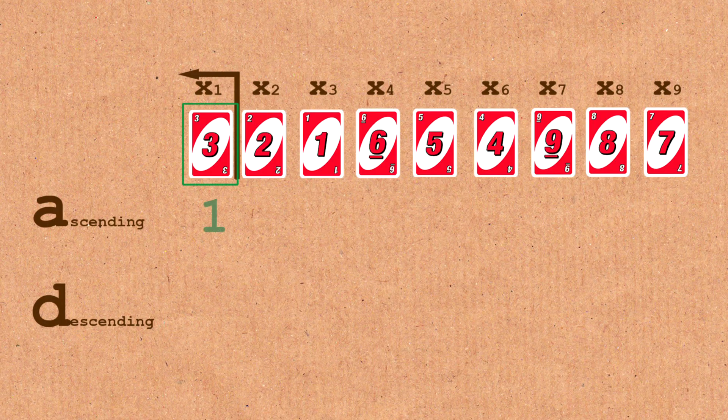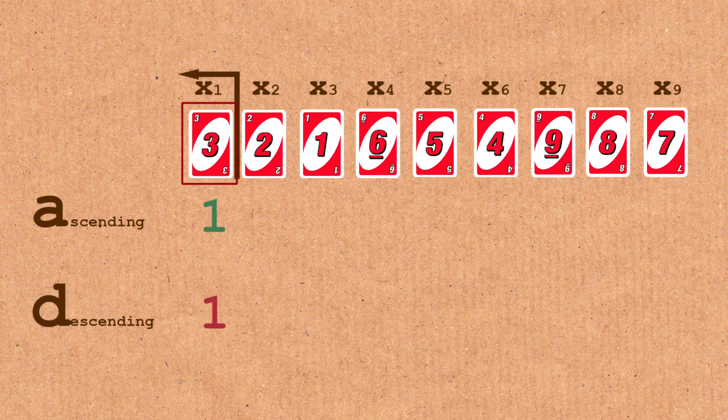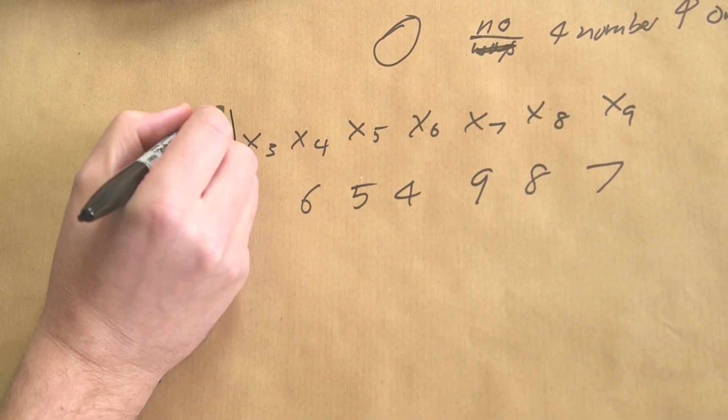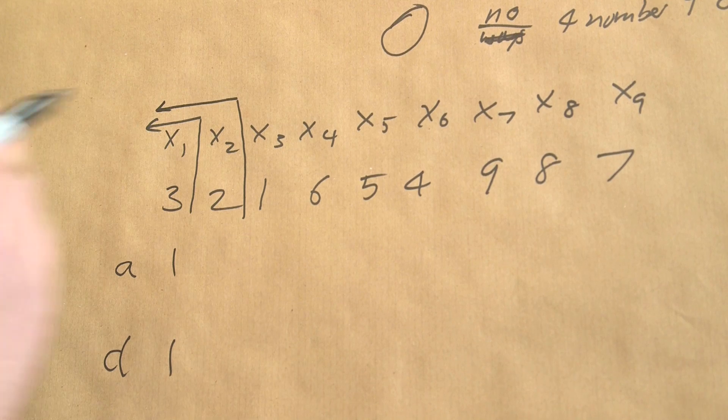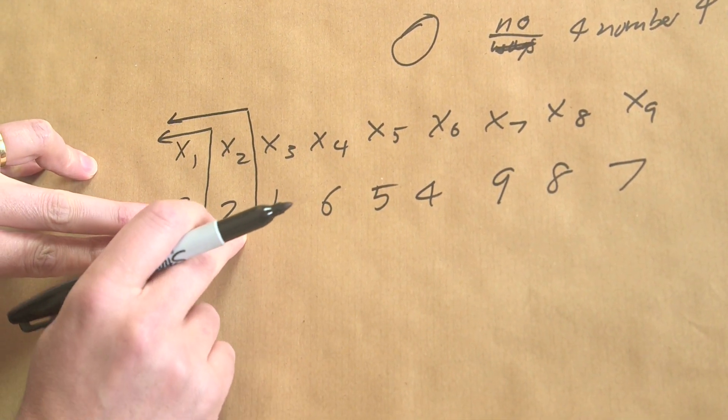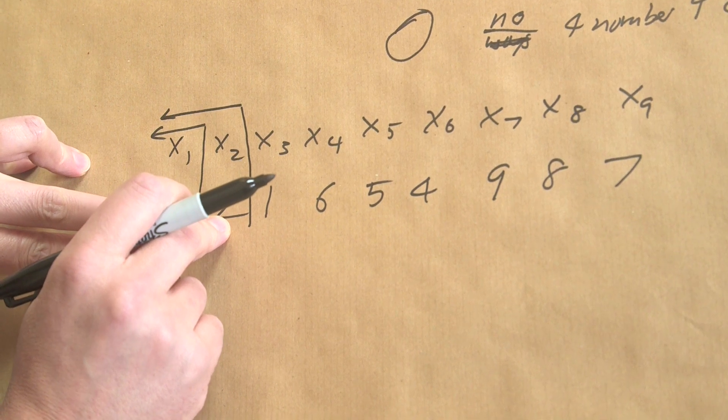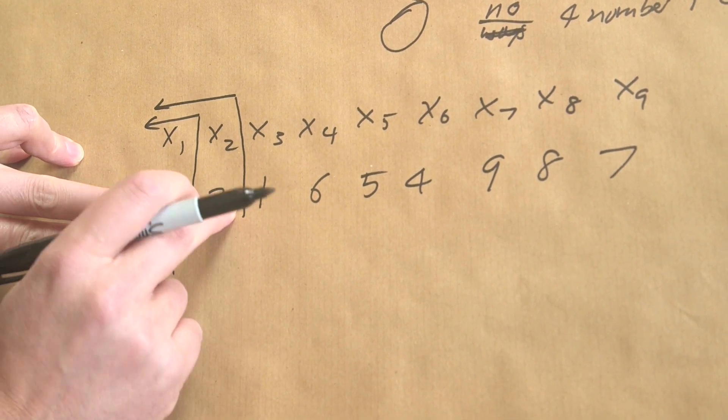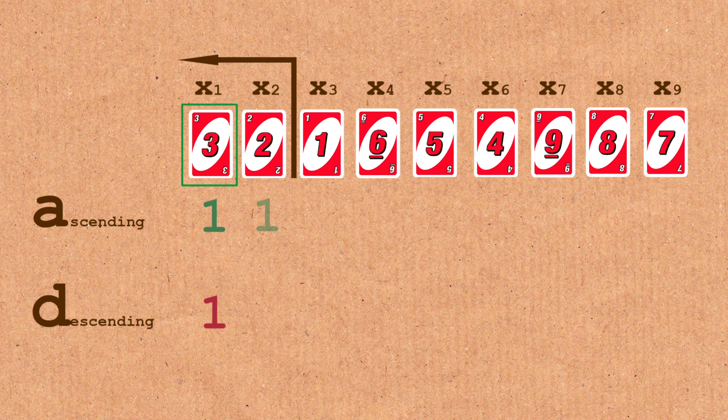Now if we look at going left to right, three, two. What's the longest ascending subsequence that ends in two? Well, two is less than three, so it's still one. But now we've got three, two going down there, so we go two.